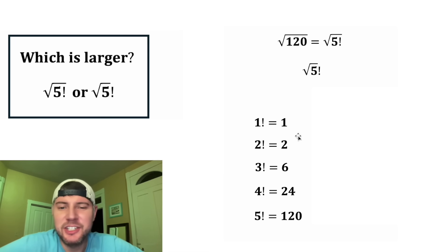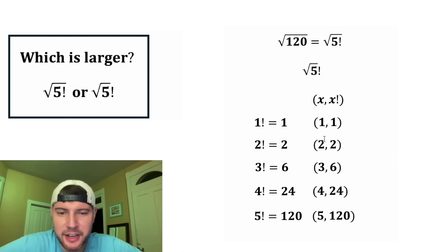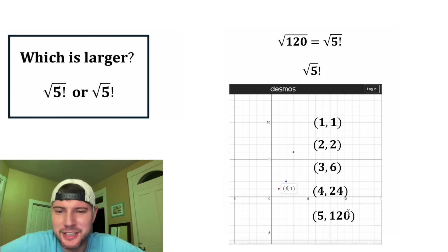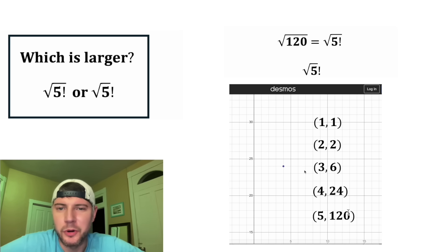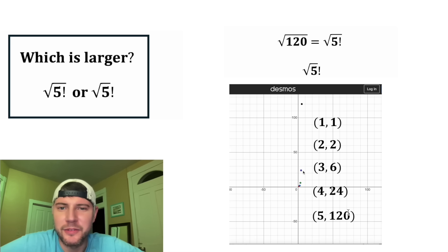We can express each of these as plotted points, where this number is our x value, and this number is our y value. And here are the plotted points in Desmos. We have 1, 1, 2, 2, 3, 6. Up here is the 4, 24. And even way up high is the 5, 120.